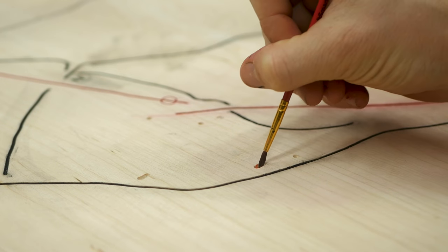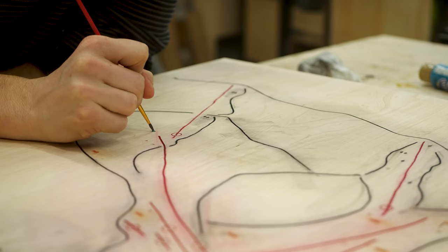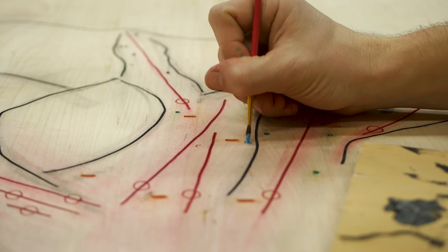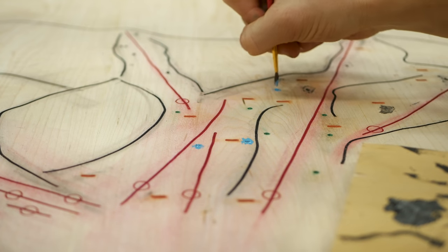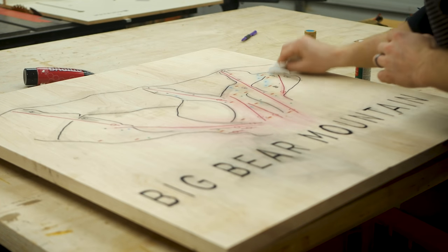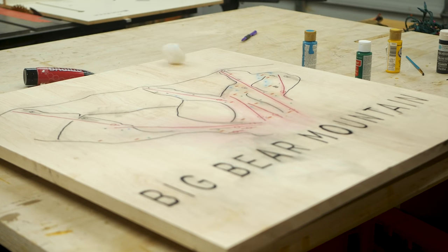Instead I used some acrylic paint and a thin brush to paint on all my lines and because the paint sat below the surface in that routed groove I could use a wet paper towel every few minutes to wipe off the excess paint. Black paint for all the mountain lines, red for the ski lifts, and various colors for the trail symbols.